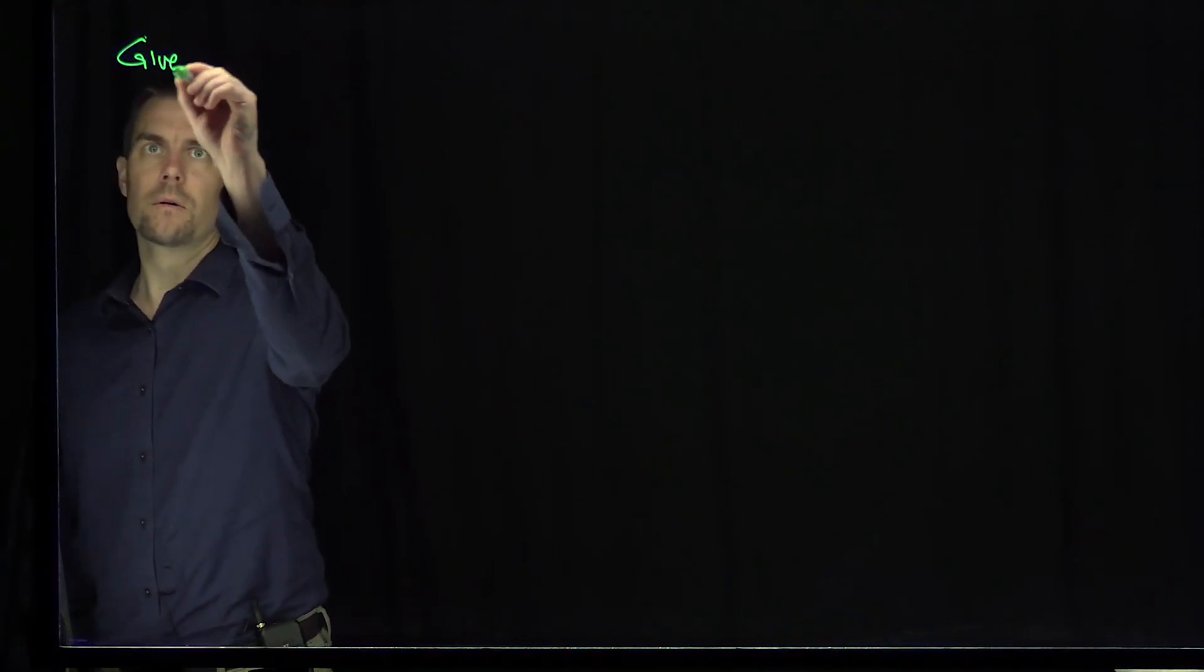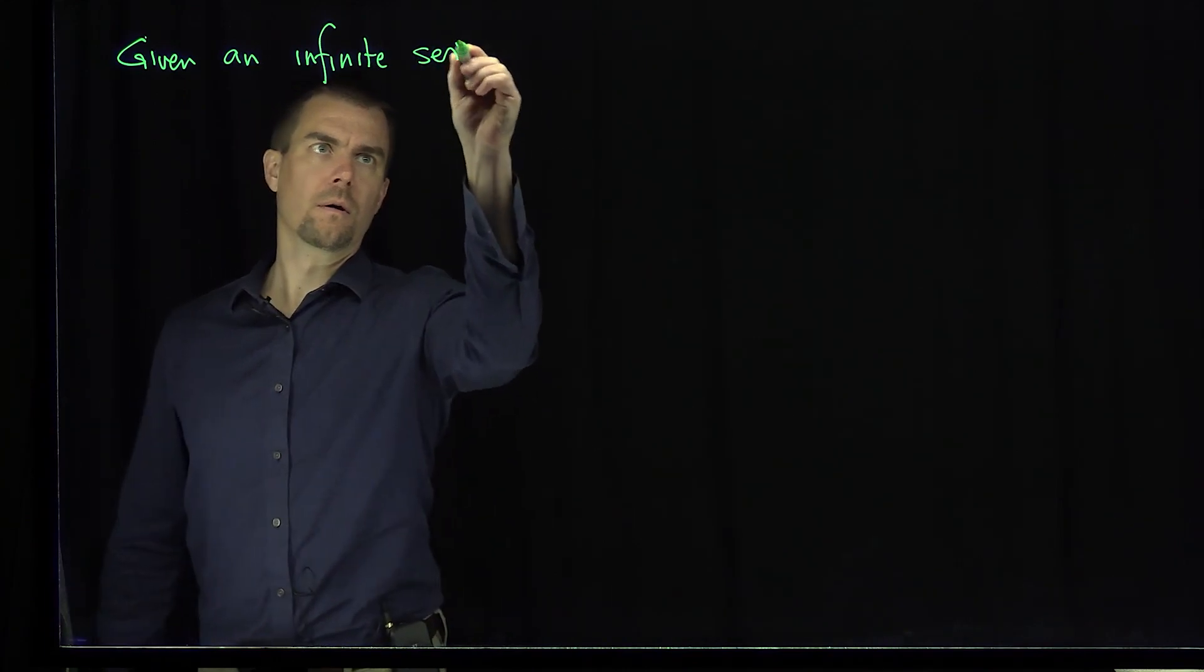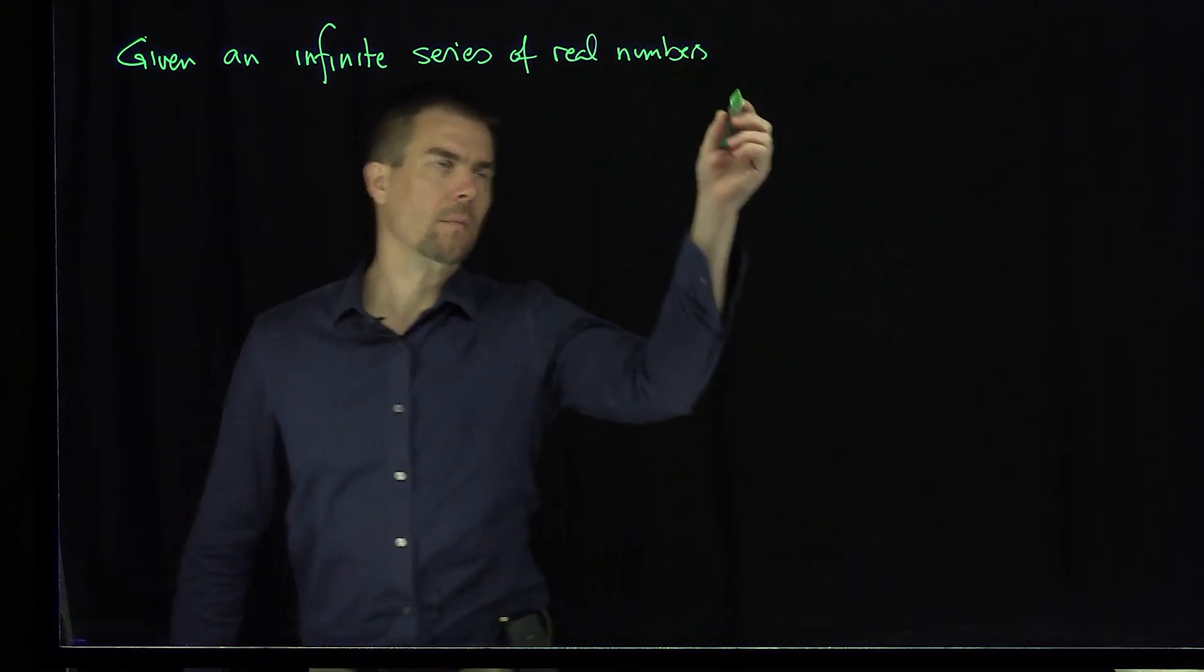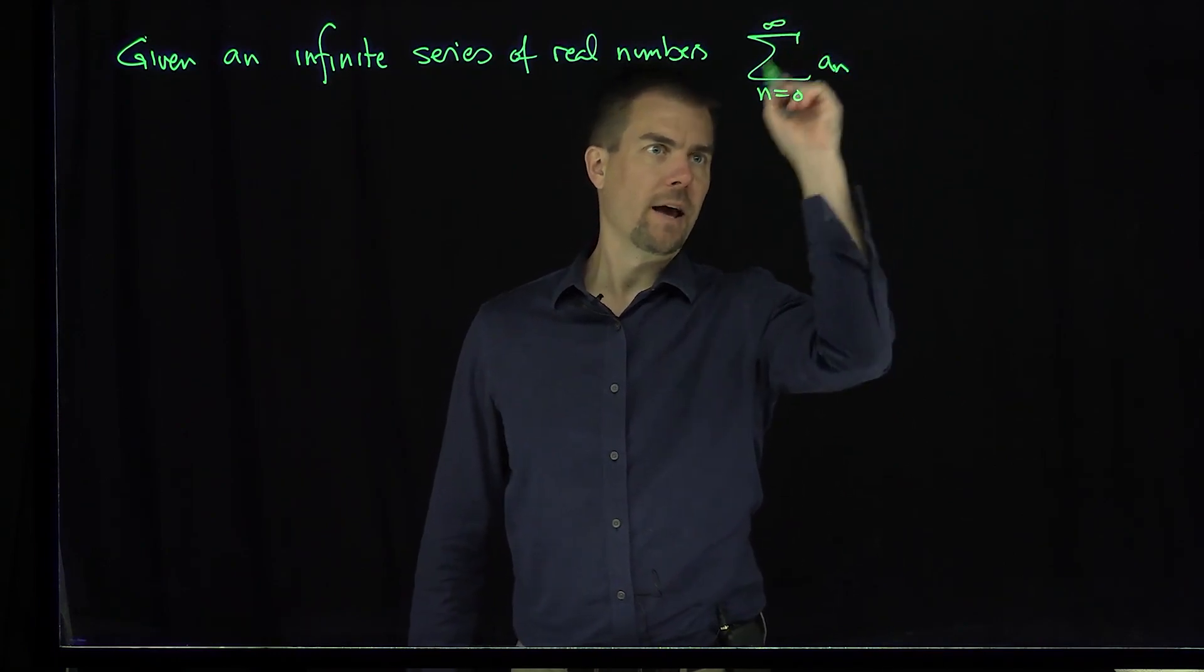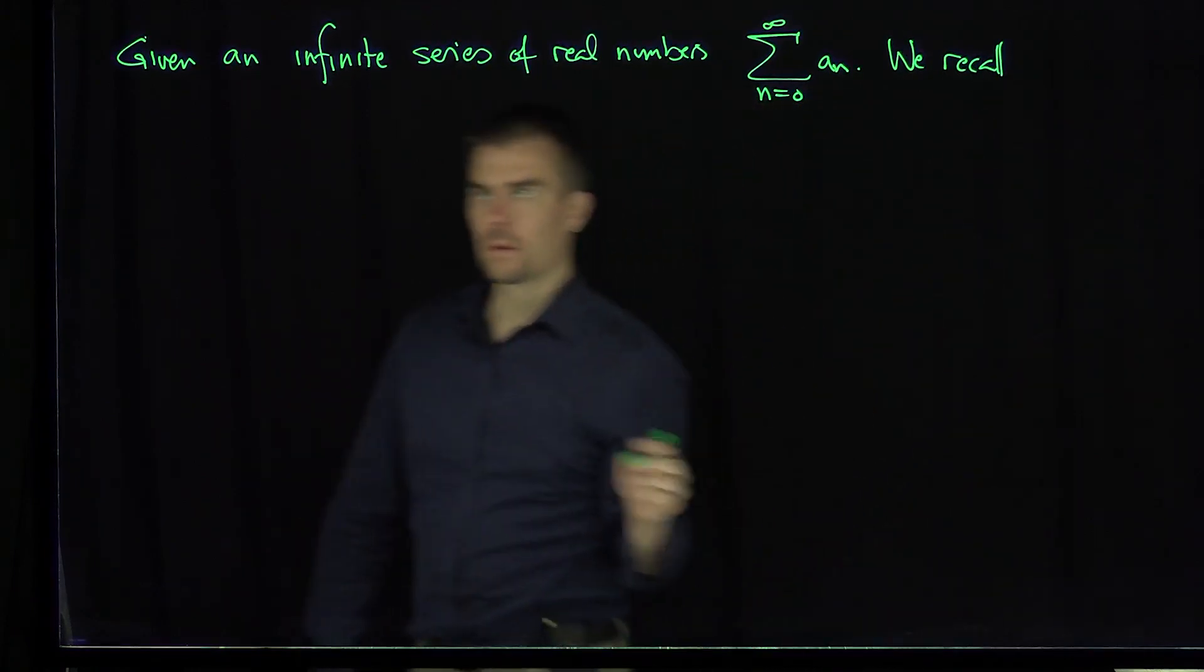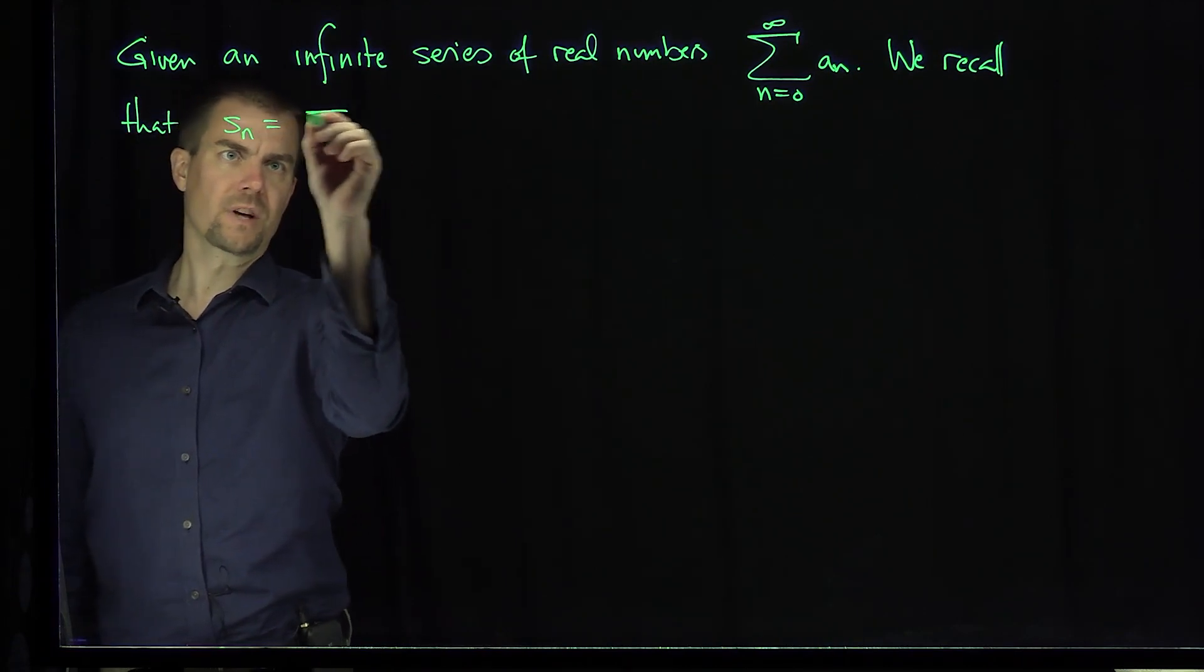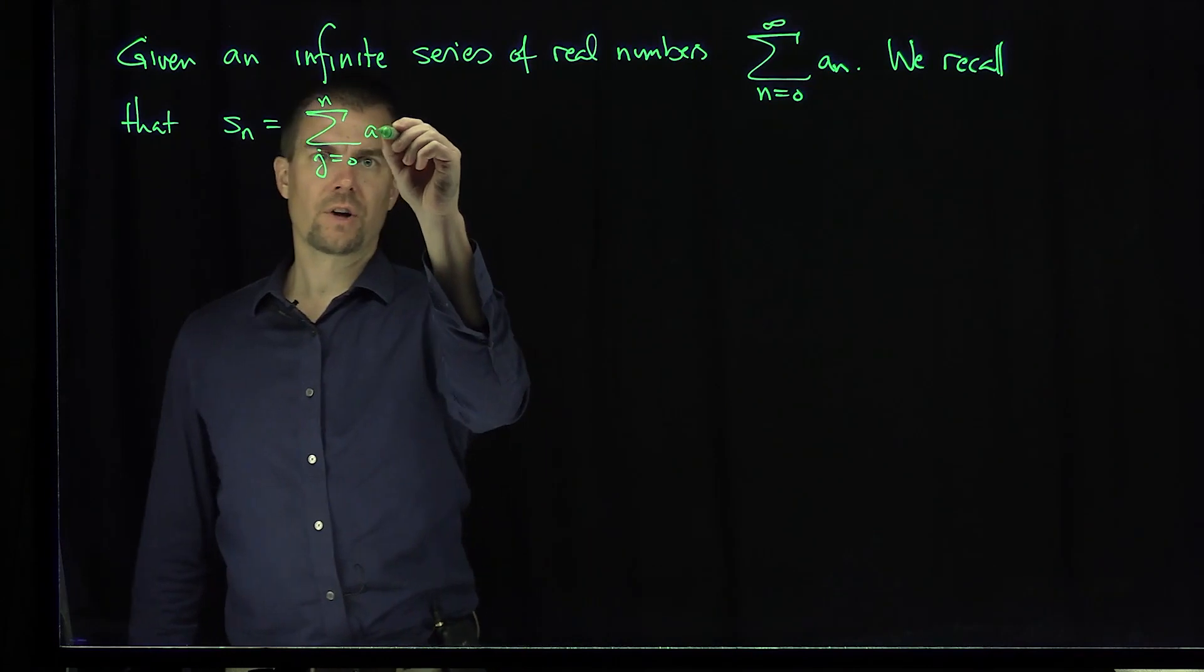Hello, students. In this video, we'll discuss the Cauchy criterion for an infinite series converging. If we're given an infinite series of real numbers, we're going to consider the sum n goes from 0 to infinity of a_n. We recall that s_n will be the sum of the first n plus 1 terms, j goes from 0 up to n of a_j, the partial sums.